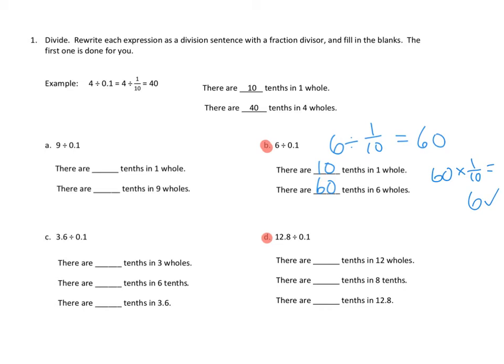Let's take a look at problem 1D. 1D asks a slightly more complicated question. 12.8, or 12 and eight tenths, divided by tenths. Again, I want to rewrite that as 12.8 divided by one tenth, okay? Let's see. Now they're going to shortcut. They're going to go straight to this. How many tenths are there in 12 holes? Well, let's see, that's twice as many as six holes, right? There were 60 tenths in six holes, so there must be 120 tenths in 12 holes.